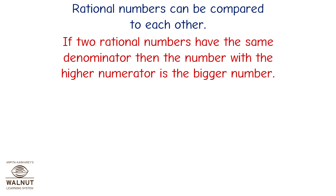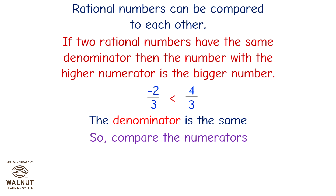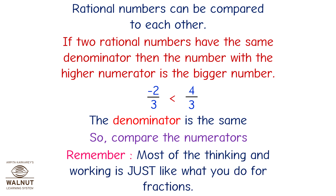If 2 rational numbers have the same denominator, then the number with the higher numerator is the bigger number. For example, minus 2 upon 3 is smaller than 4 upon 3. Remember, most of the thinking and working is just like what you do for fractions.